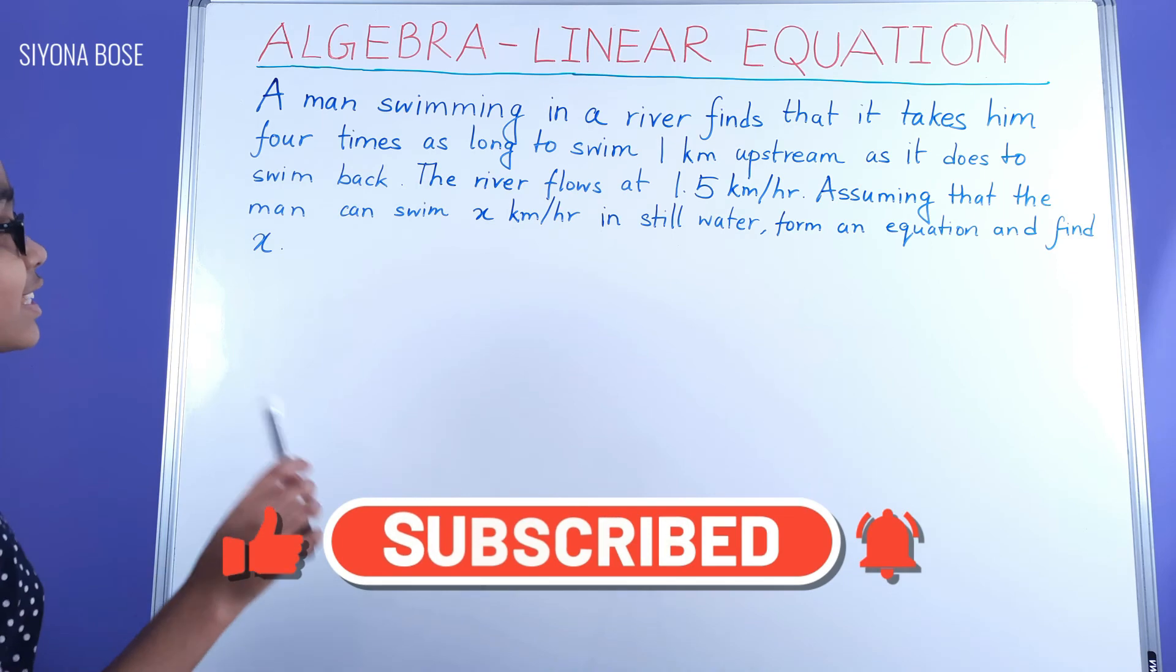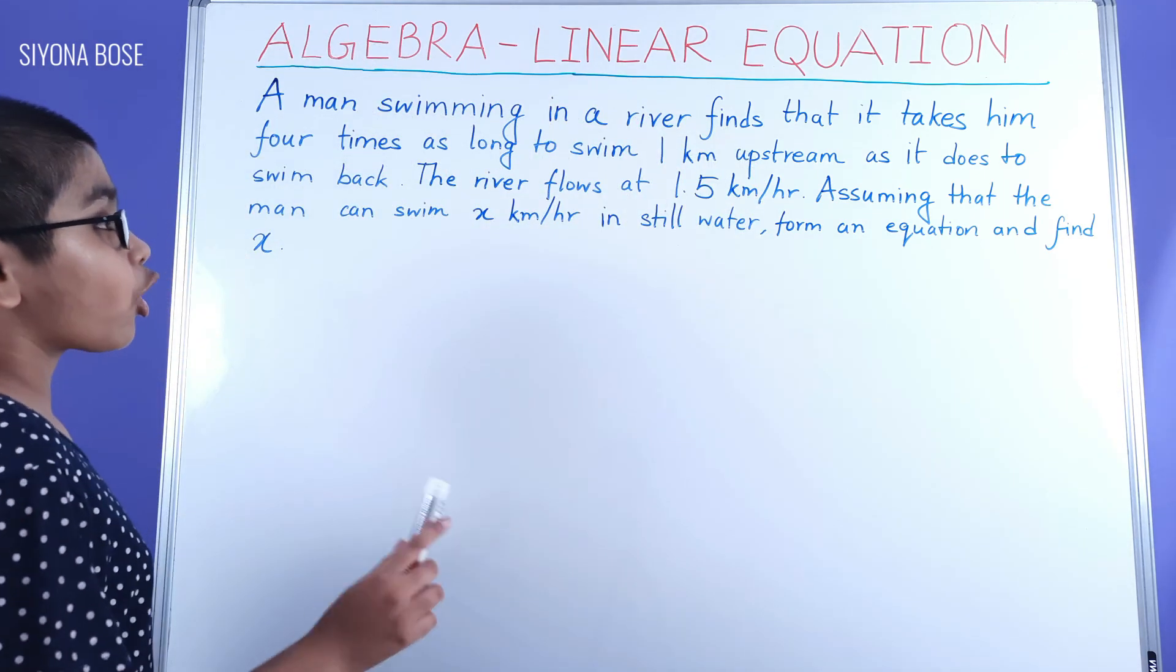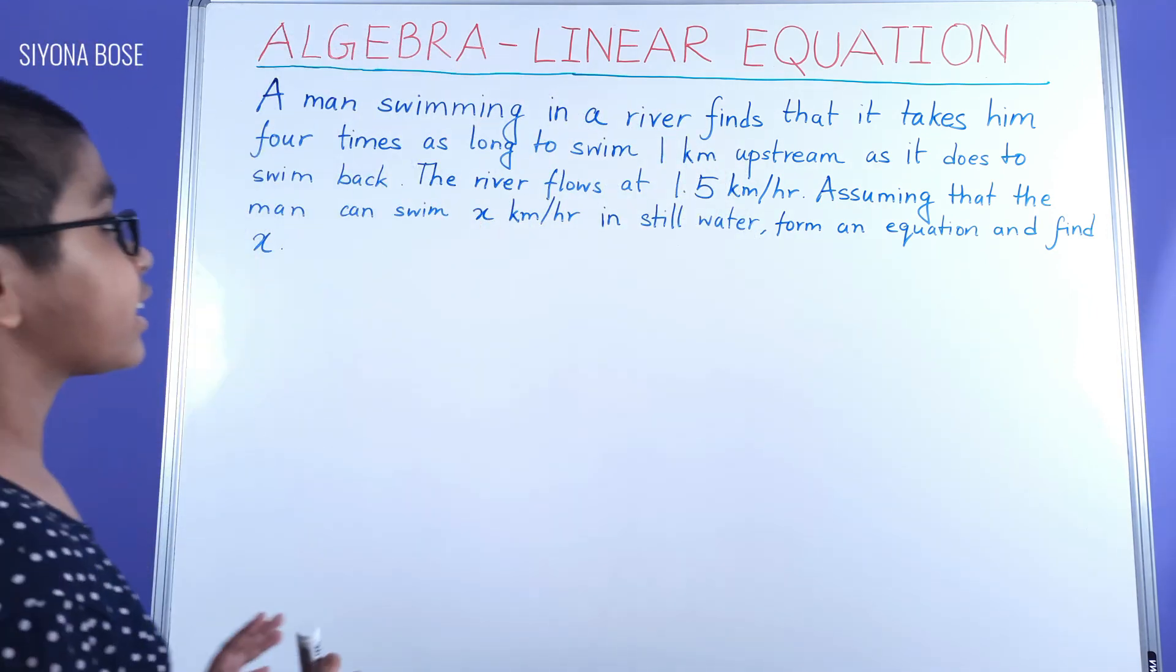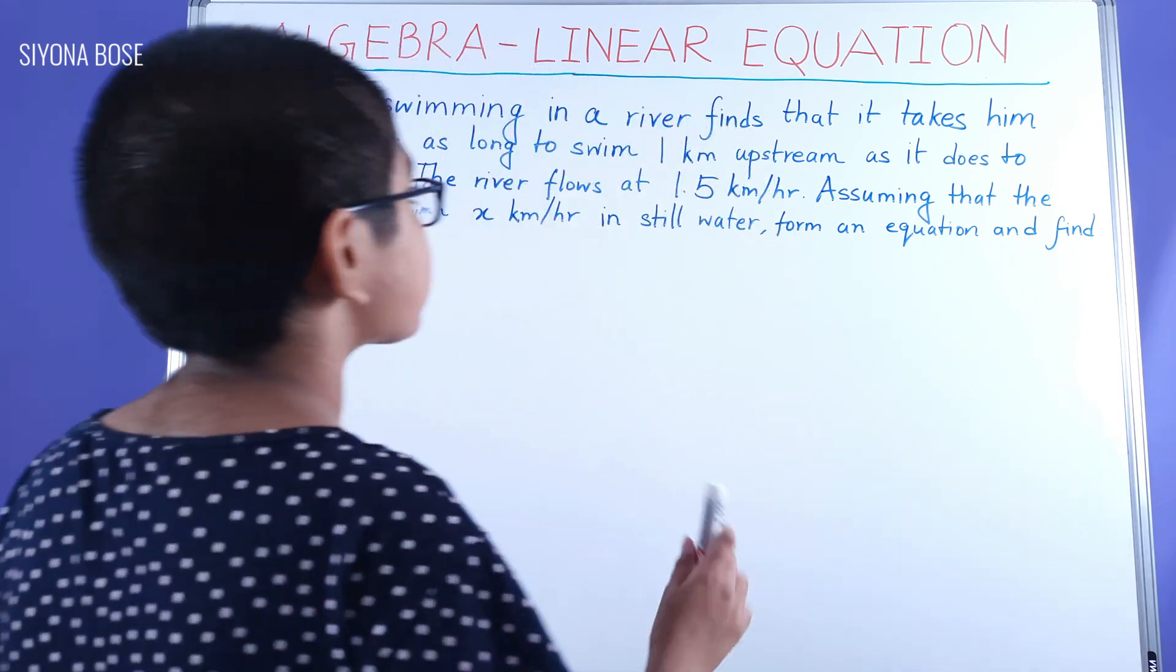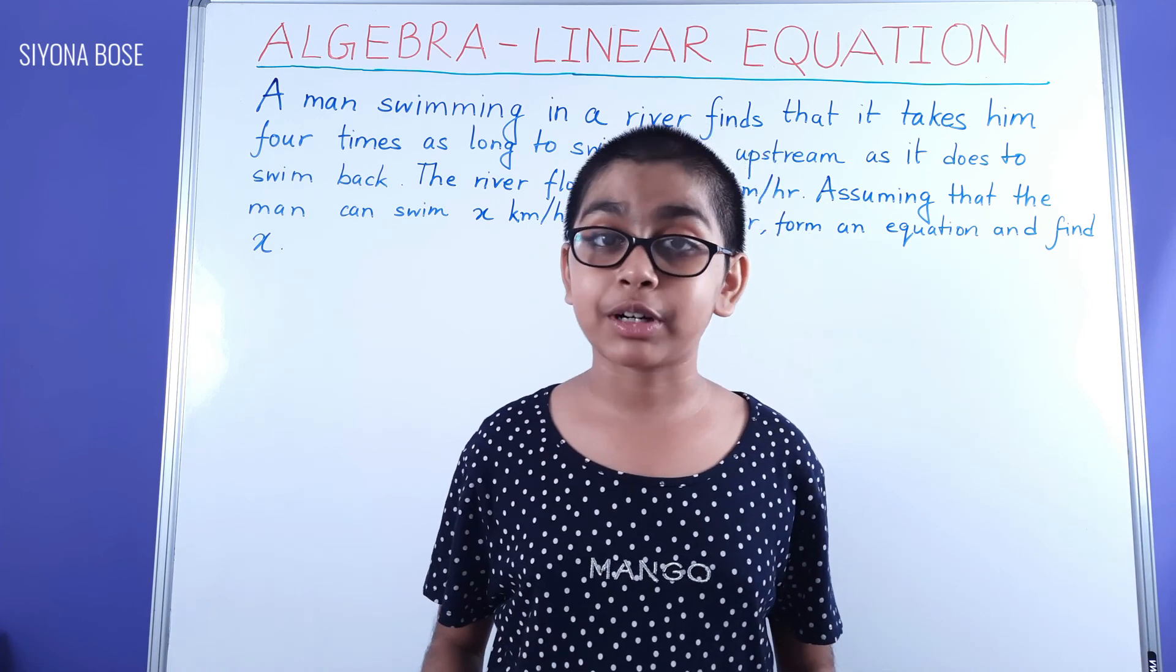The river flows at 1.5 kilometers per hour. Assuming that the man can swim X kilometers per hour in still water, form an equation and find X. First we have to understand what they mean by upstream and swim back. That means downstream, the opposite of upstream.